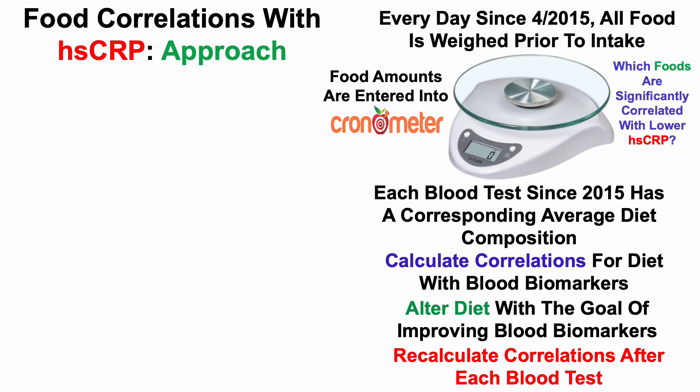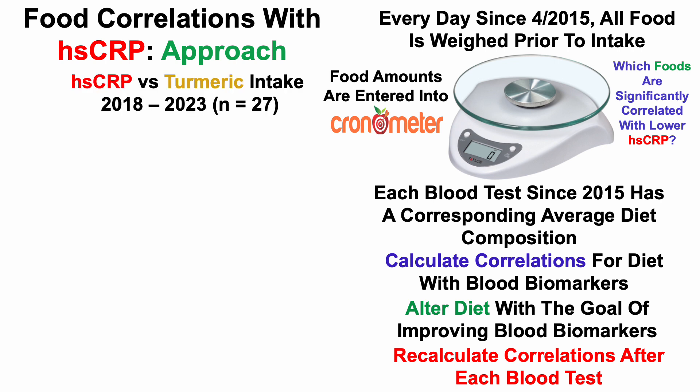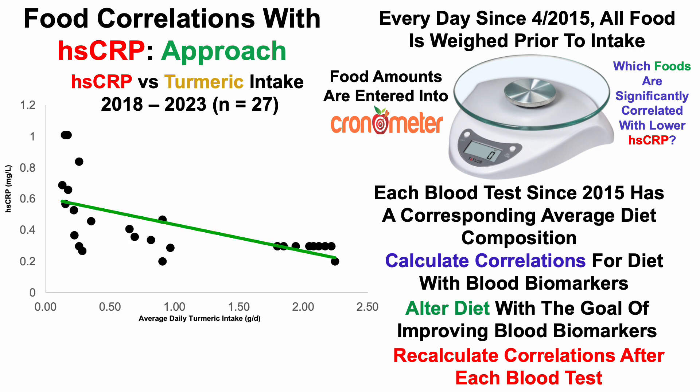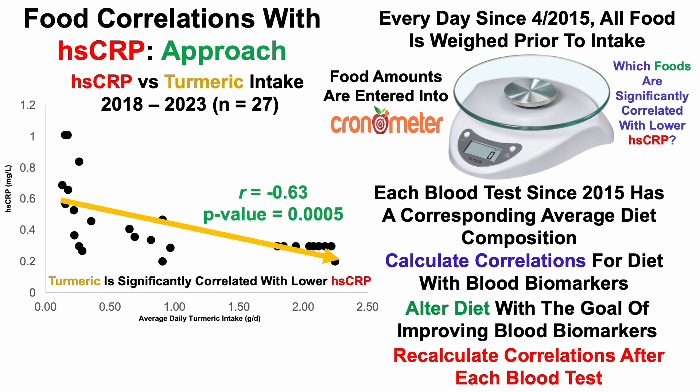Which foods are significantly correlated with lower HSCRP? In my data, that happens to be turmeric. Note that although I've weighed all of my foods since 2015, I only started tracking HSCRP in 2018, so I have 27 blood tests over that five-plus year span for HSCRP versus food intake. The strongest correlation is with turmeric — a relatively higher average daily turmeric intake is significantly correlated with lower HSCRP.